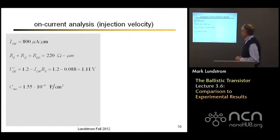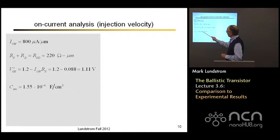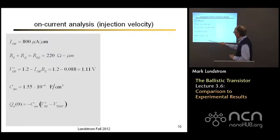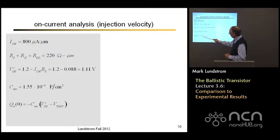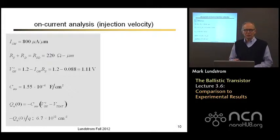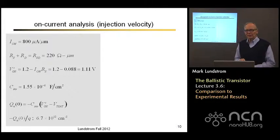The measured gate inversion layer capacitance under strong inversion conditions is 1.55 microfarads per centimeter squared. Knowing the intrinsic gate-to-source voltage, the estimated saturation threshold voltage, and the gate capacitance, we can deduce the charge at the top of the barrier. Dividing by the electron charge q gives the number of electrons per square centimeter in the channel: 6.7 times 10 to the 12th per centimeter squared.